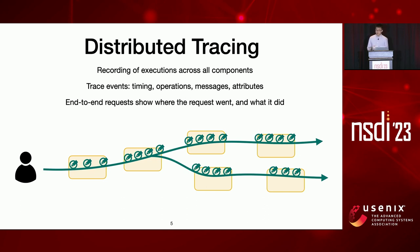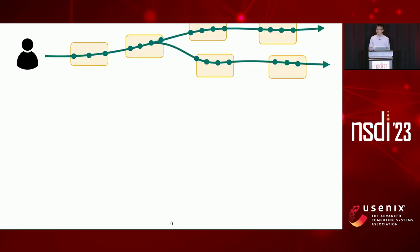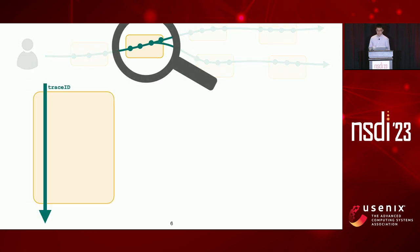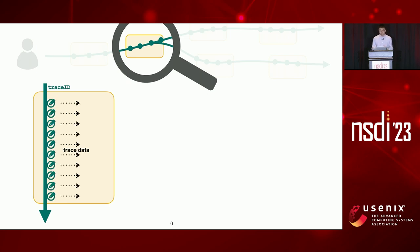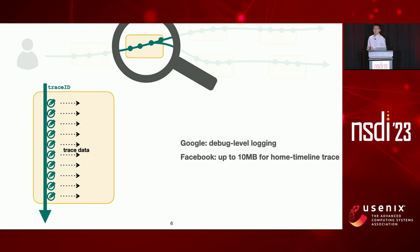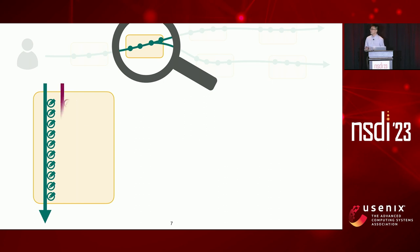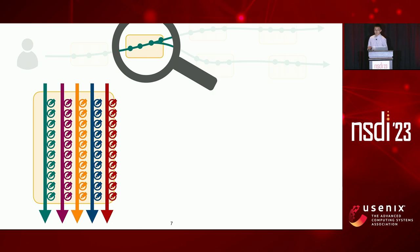An end-to-end trace of a request takes all the trace events from all machines and combines them together, showing where the request went and what it did. At the process level, when a request arrives it carries a trace ID serving as its unique identifier. Once executed, the application generates trace events; the trace ID tells us which request each event belongs to. Traces can vary in detail — Google claimed their tracing system supports modern debug-level logging, and at Facebook a home timeline trace can result in more than 10 megabytes of data for a single request. With many concurrent requests on the same component, this results in a large amount of trace data.